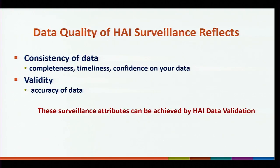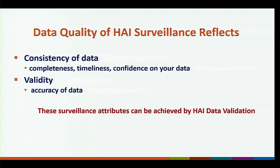When we talk about data quality, we generally refer to two things: consistency and validity. Consistency of data means completeness, timeliness, and having confidence in your own facility's data. Validity refers to how accurate the data is — meaning if somebody else reviews the chart, are they able to determine the same case determination that you did? Both the consistency and the validity of data can be achieved by HAI data validation.